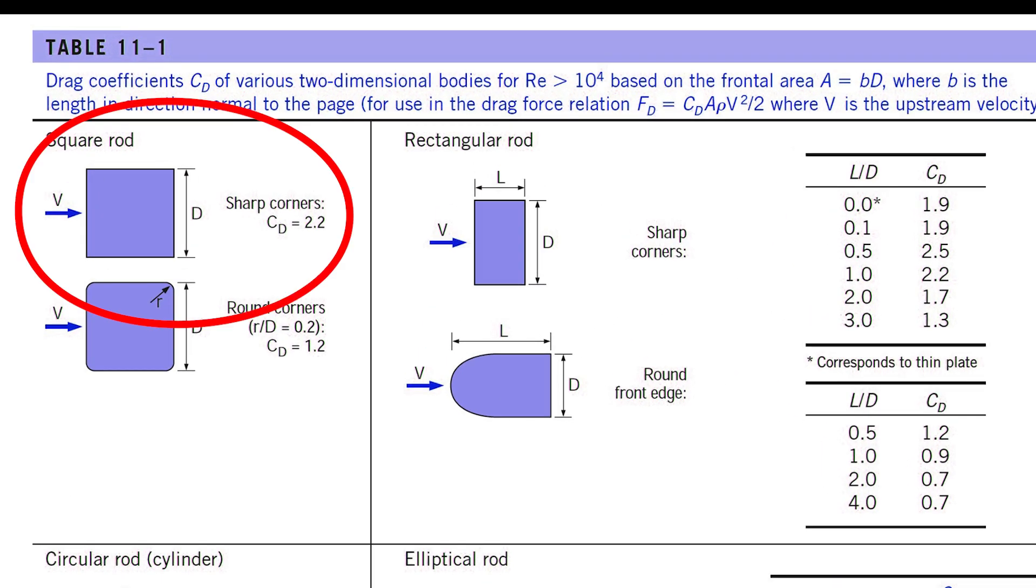For blunt bodies with sharp corners, such as this rectangular block, separation occurs at the edges of the front and back surfaces.